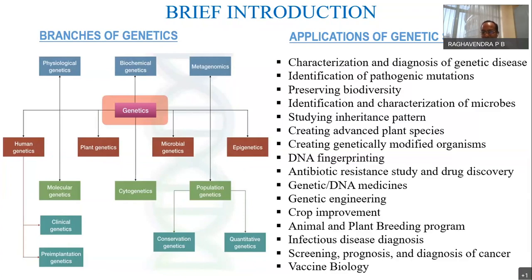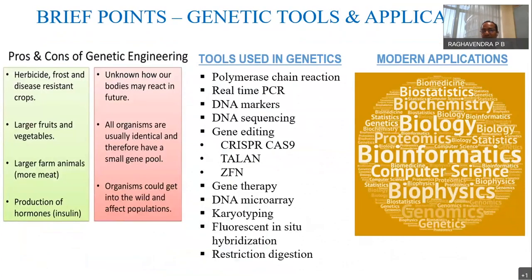Genetic and DNA medicines, genetic engineering — you would have studied recombinant DNA technologies for crop improvement and animal breeding programs. The bigger thing now is vaccine biology, where upcoming vaccines are coming. When we use genetic engineering, we can foster herbicide-resistant crops, improve the quality of plants, and produce bigger and larger fruits and vegetables.